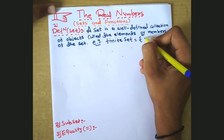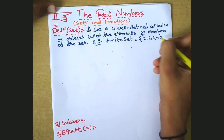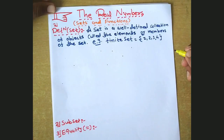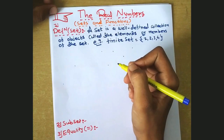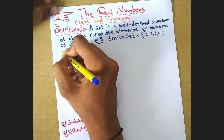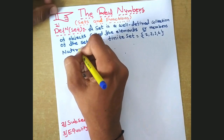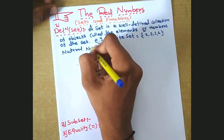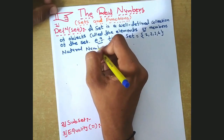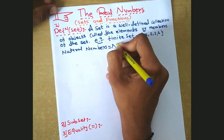Let's have an example. We take the example of a finite set — like {1, 2, 3, 4}, this is a finite set. Now, the set of natural numbers: the set of natural numbers is denoted by N.